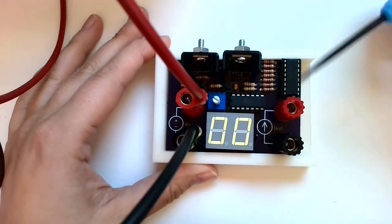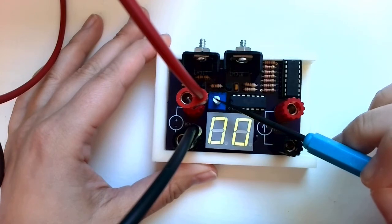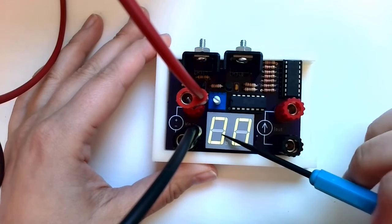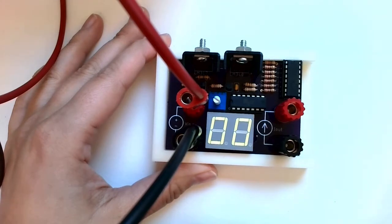What you notice when you first plug this thing in is that regardless of the setting of this potentiometer, which is used to control the current, this guy is going to read zero. The reason it's reading zero is because there's no load connected to this at all.